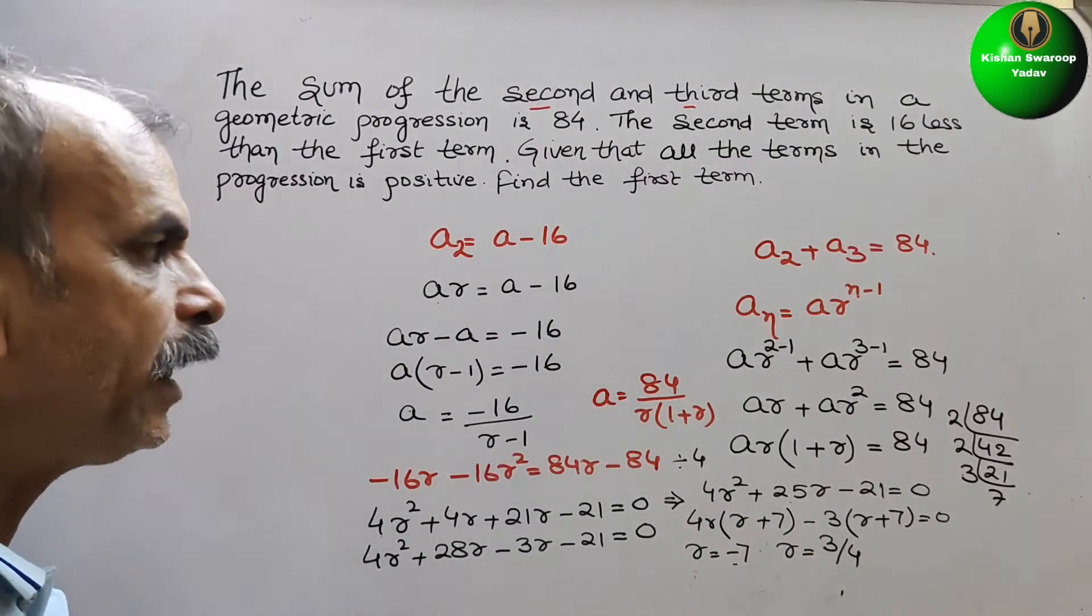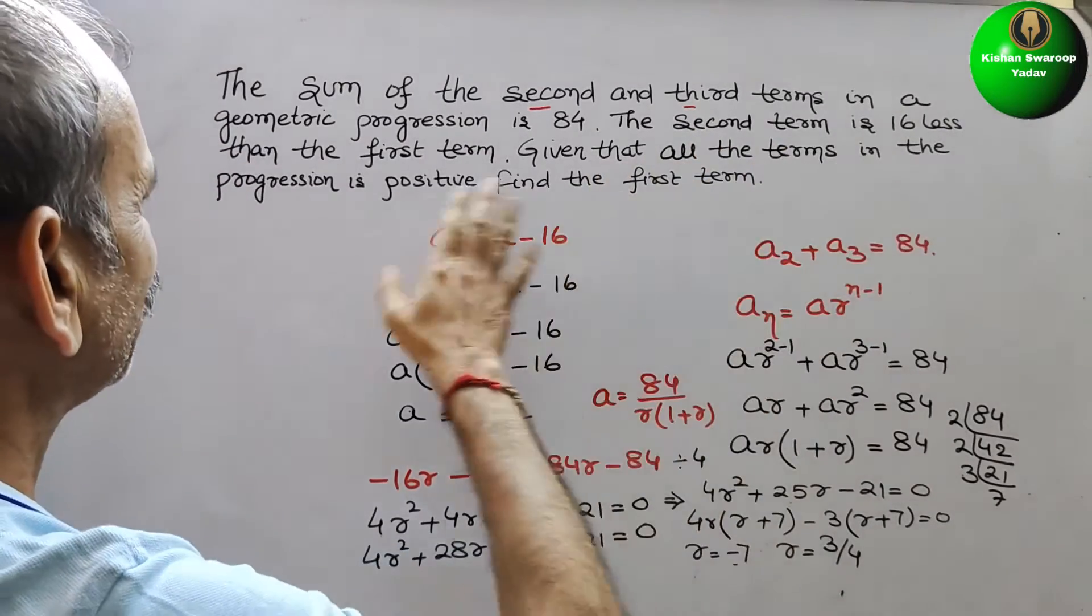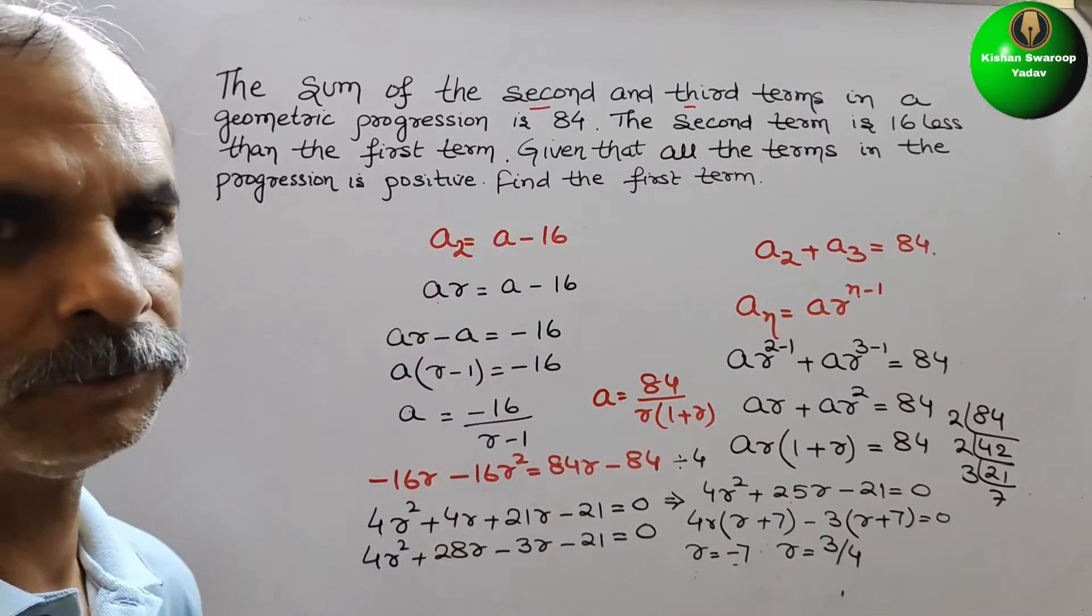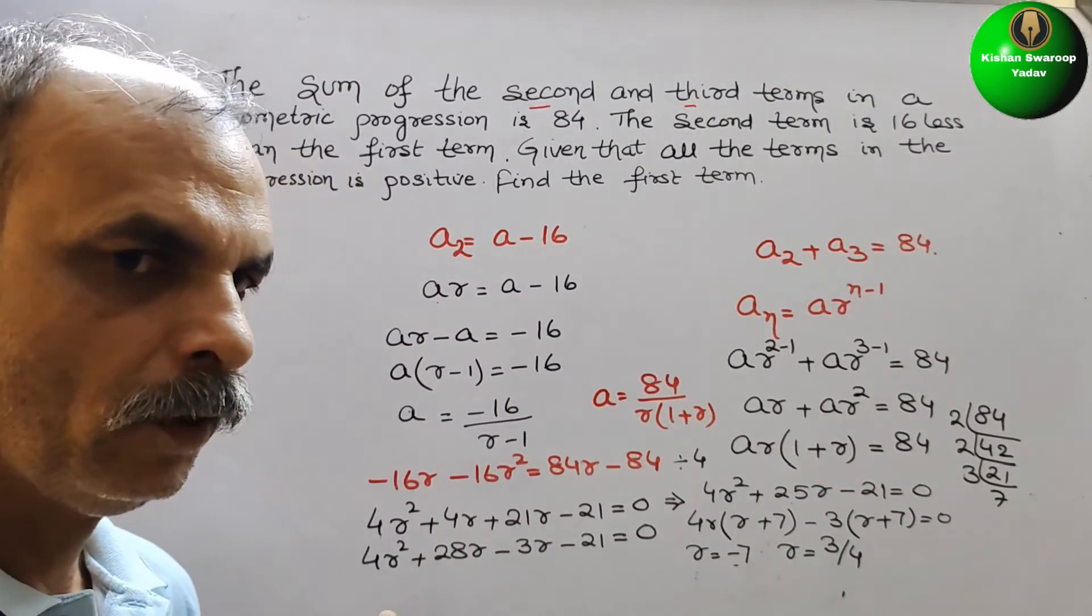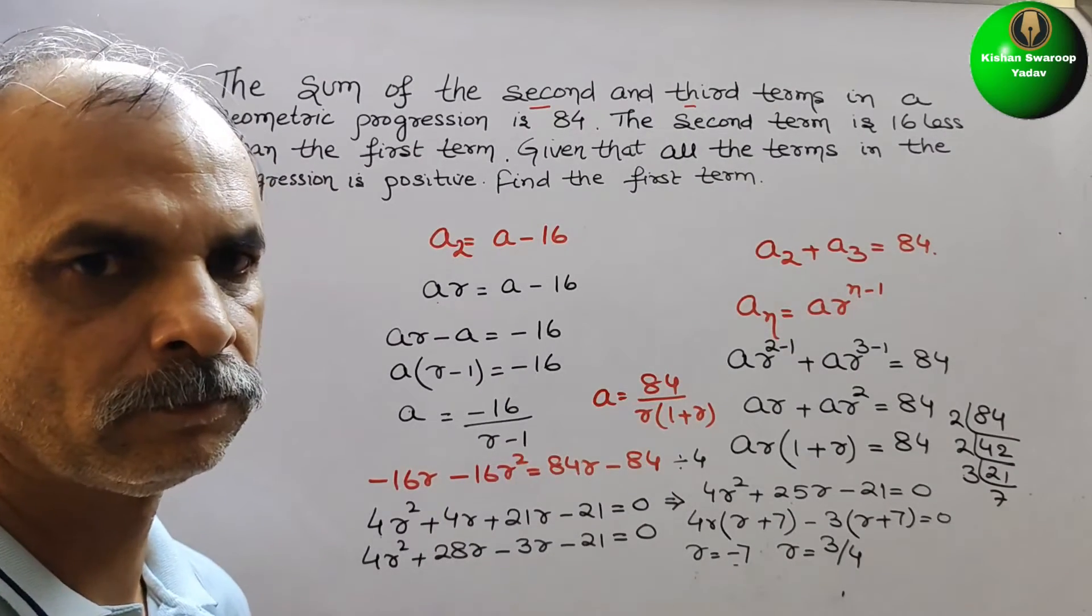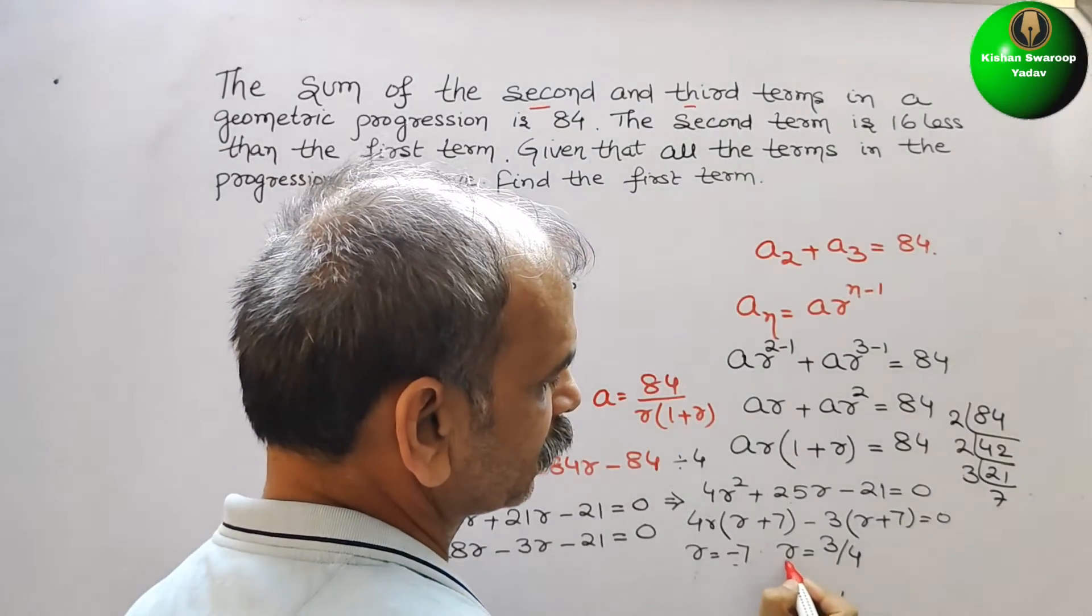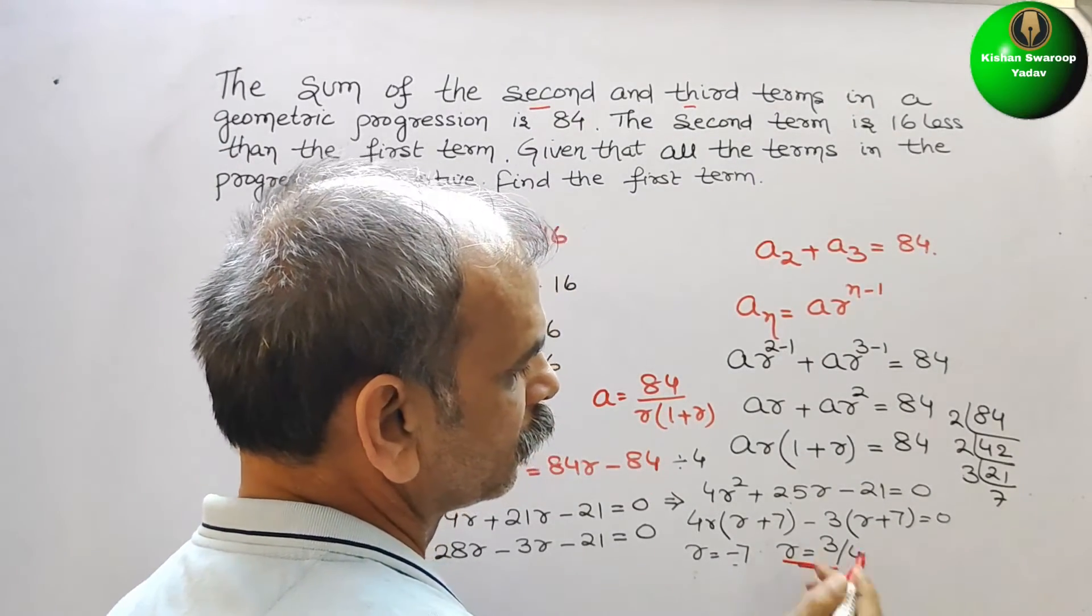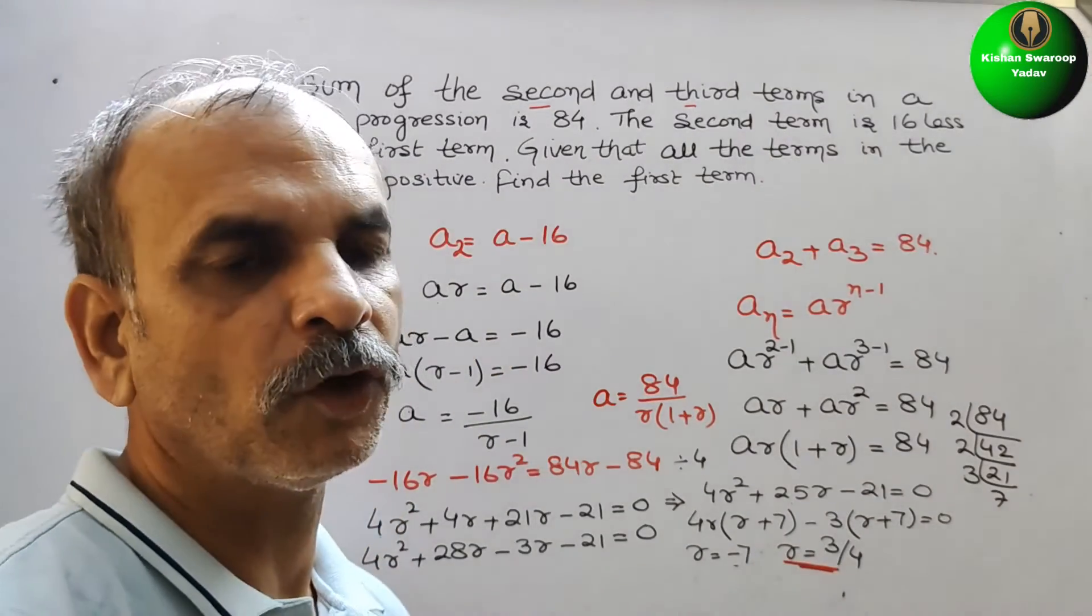Now they have told that all the terms in the progression is positive. Every term is positive. So that means we should not take negative. Every term is positive. So we will take this, only positive one. So r is 3 by 4.